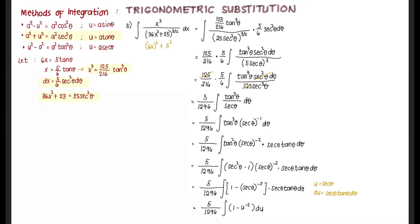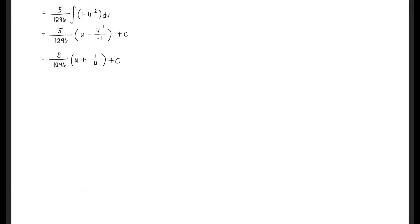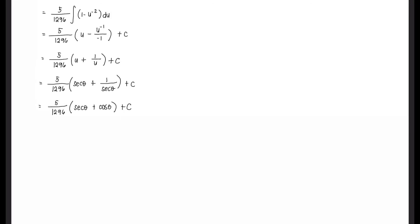Recalling that u = sec θ, we replace u: (5/1296)(sec θ + 1/sec θ) + C. Since 1/sec θ = cos θ, this becomes (5/1296)(sec θ + cos θ) + C. But θ is not our original variable, so we draw a right triangle to express sec θ and cos θ in terms of x.